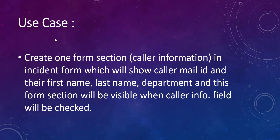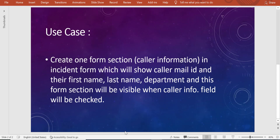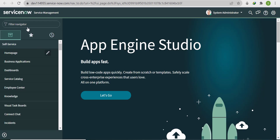We'll take one use case: create a form section named 'Caller Information' in the Incident form, which will show the caller's mail ID, first name, last name, and department. This form section will be visible only when a 'Caller Info' field is checked. Let's go to the instance and implement this.